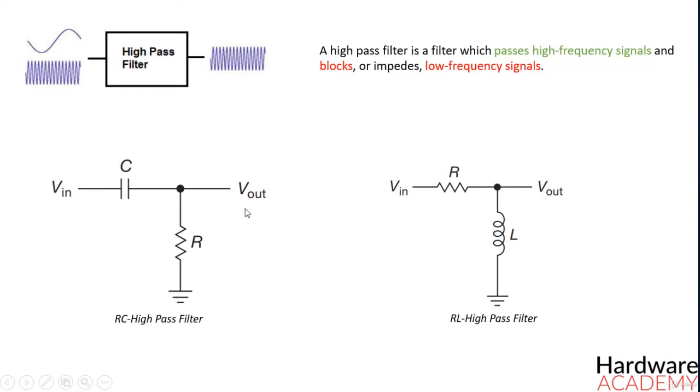We will go through both of these types of circuits and show how both RC and RL high-pass filters are constructed. Both circuits have the effect of passing through high-frequency signals while impeding low-frequency ones.